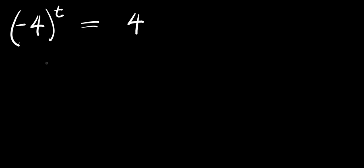Hello, how to solve this exponential problem: negative 4 to the power of t equals 4. We are solving for the value of t that satisfies this equation. Now let's make use of the first method.